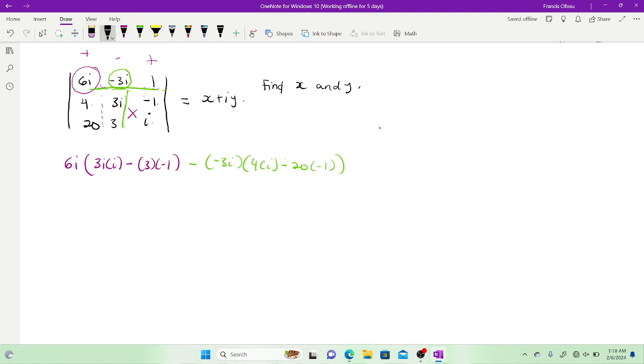Then finally I will take this 1 and it's positive. Open brackets, 1 is going to nullify everything here, so I'll be left with just this inside. So 4 times 3 minus 20 times 3i, and everything I have here should be equal to x plus iy.